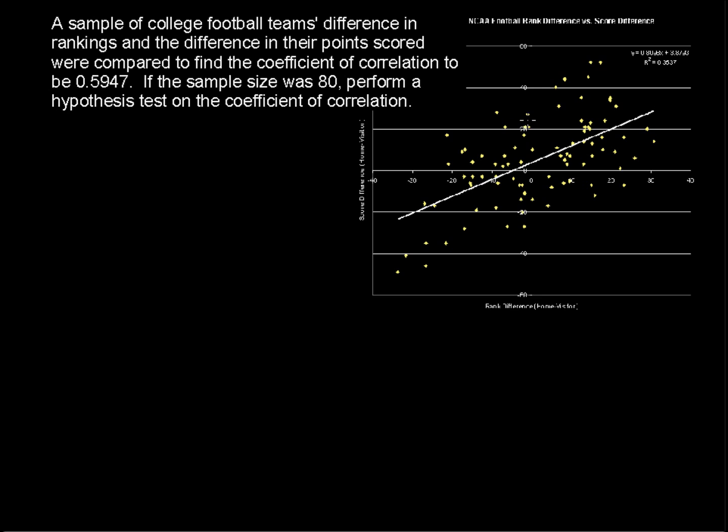A sample of college football teams' difference in rankings and the difference in their points scored were compared to find the coefficient of correlation to be 0.5947. If the sample size was 80, perform a hypothesis test on the coefficient of correlation.